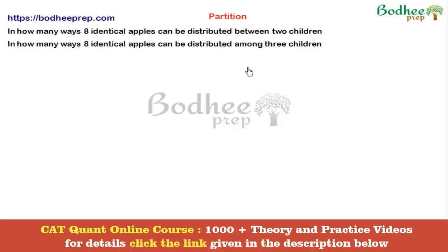Let us understand a very important category of questions within permutation and combination called partition, and the rule we use to solve such questions is called the stars and bars method. The questions from this category can be framed in a variety of ways. The only thing we do in each question is manipulate it so that the method we will learn can be applied.